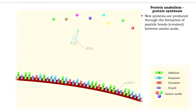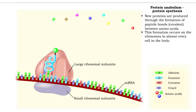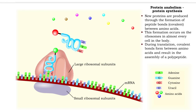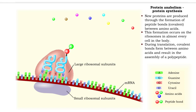Protein anabolism produces new proteins through the formation of peptide bonds between amino acids. The process takes place on the ribosomes in virtually all cells. Covalent bonds form between amino acids during the process of translation. This continues until a polypeptide has been formed.